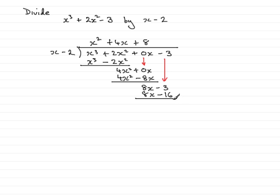Subtract to find the remainder. Now this is the point where you'll notice that the 8x minus 16 isn't the same as the 8x minus 3. So what we have now is minus 3 minus minus 16, which ends up being 13. So in this particular question, we have a remainder of 13.